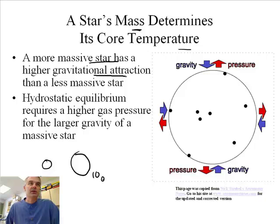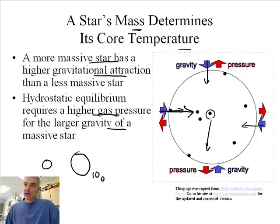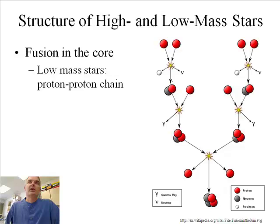The more massive star has a higher gravitational attraction than a less massive star. If you think of gravity pushing down on a star, that's the blue arrow. But we have hydrostatic equilibrium that requires a larger gravity for a massive star. If you've got a more massive star, it's going to have to have a greater pressure because it's going to have to overcome the greater gravity.